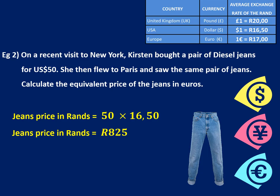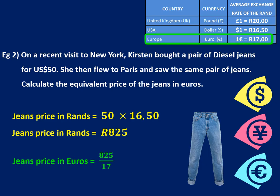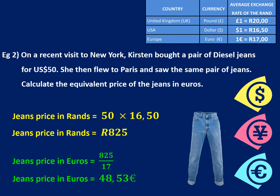Now we want to convert that into euros. If 1 euro is equivalent to 17 rand, we want to know how many euros will be equivalent to 825 rand. So we're going to take 825 and divide it by 17, giving us 48.53 euros. So just look at the difference in the calculations: if you're given a dollar price, you're going to multiply it by 16 rand 50. But if you're given South African rands and you want to convert to euros, dollars, or pounds, you'll have to divide by that specific exchange rate.